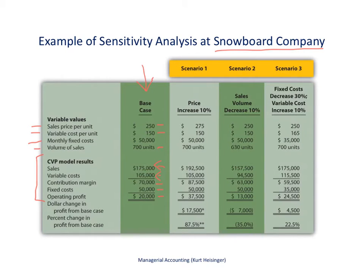The analysis shown here demonstrates what will happen if we change variables related to the base case. For example, if we increase the price by 10% — the second column of numbers you see here — then the sales price will go from $250 to $275 per unit.